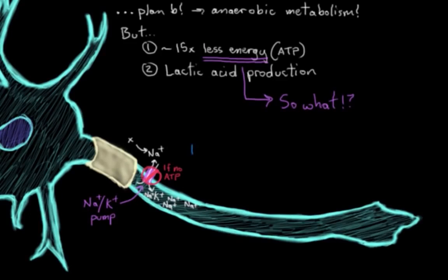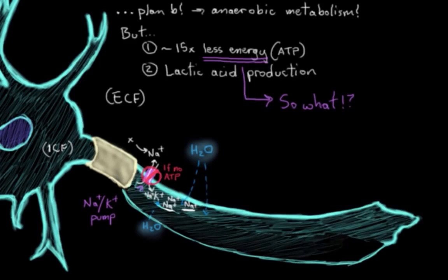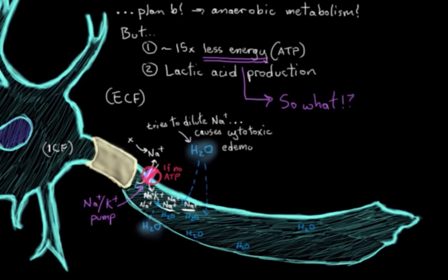So sodium starts to build up inside the neuron because it's not being pumped out. And when water in this extracellular fluid, this ECF here, notices this high concentration of sodium in the intracellular fluid, in the ICF, the water rushes inside the neuron to try to dilute out that high concentration of sodium in the neuron. So what ends up happening from there is that the neuron now starts to swell because it's being filled with so much water that's trying to dilute that high sodium concentration.